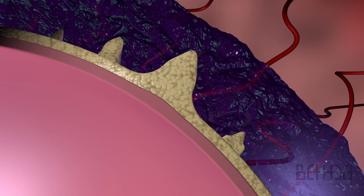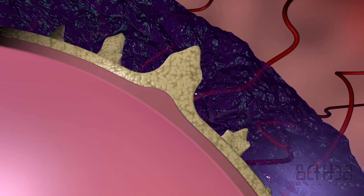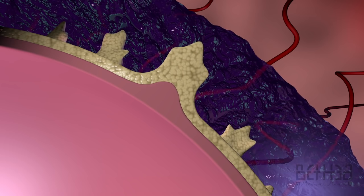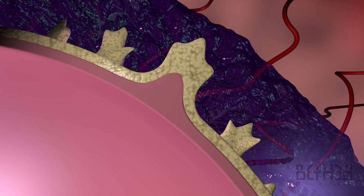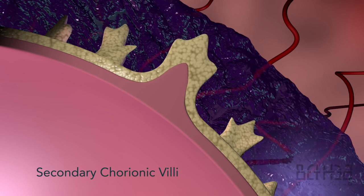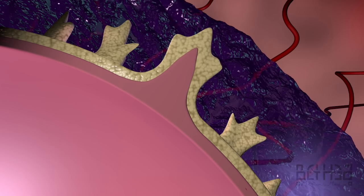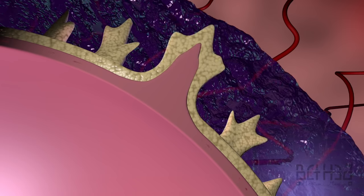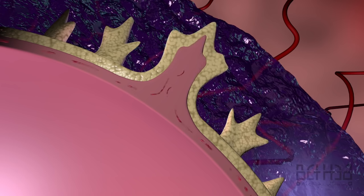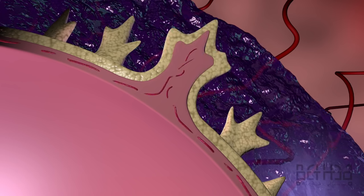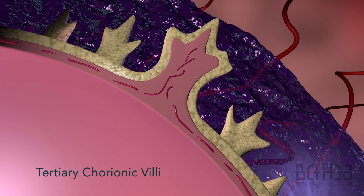Early in the third week, extraembryonic mesoderm grows into these villi, forming a core of loose connective tissue, at which point the structures are known as secondary chorionic villi. By the end of the third week, embryonic blood vessels have begun to form in the extraembryonic mesoderm of the secondary chorionic villi, transforming them into tertiary chorionic villi.